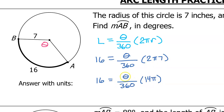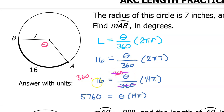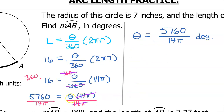Our goal is to get theta by itself. Let's get rid of the denominator by multiplying both sides of the equation by 360. If I multiply by 360 on the left and on the right, on the right-hand side the 360 cancels out. 360 times 16 turns out to be 5760. To get theta by itself, we just need to divide both sides by 14 pi. That leaves theta by itself, so this is one version of the answer.